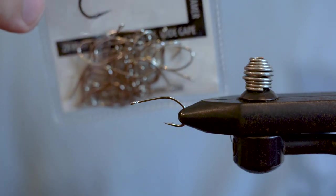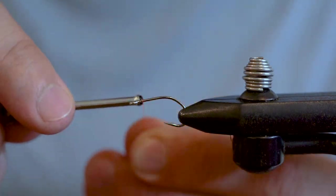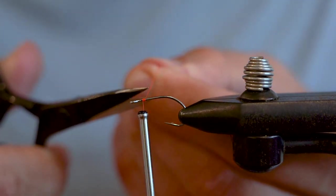We're going to start off using the Allen SW003 saltwater hook in a size 8. Start your thread one eye length back from the hook eye.